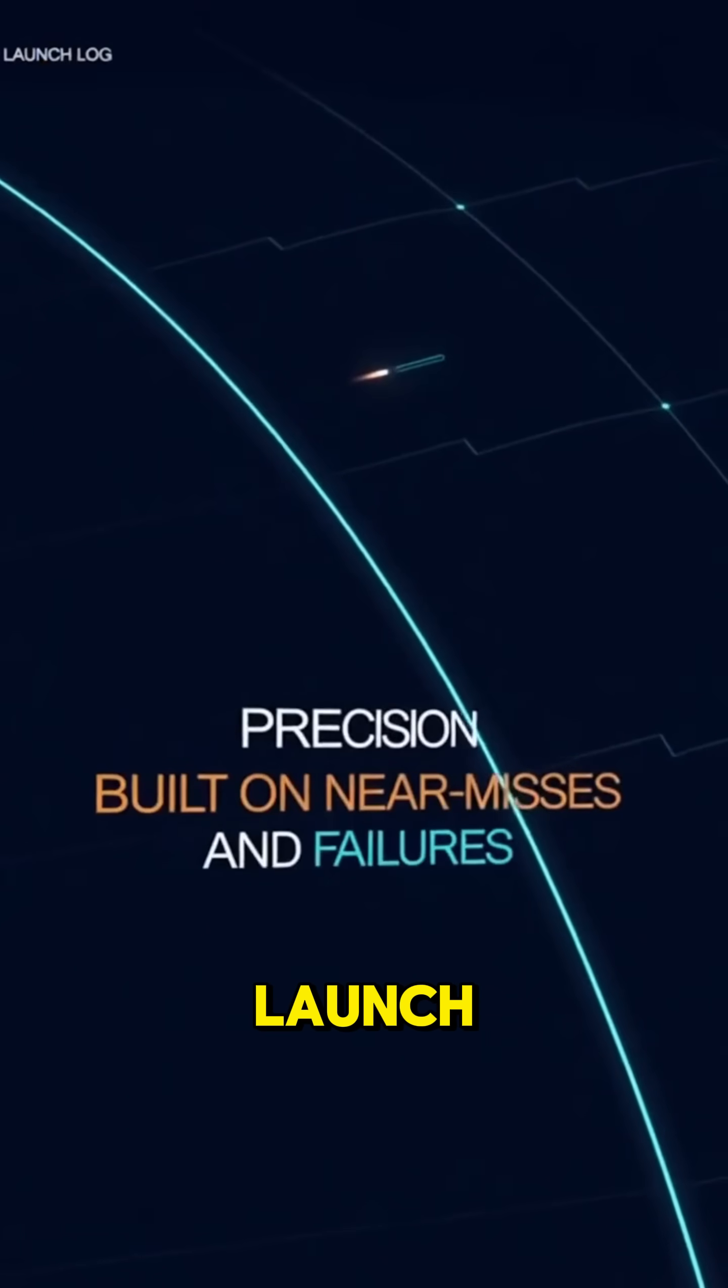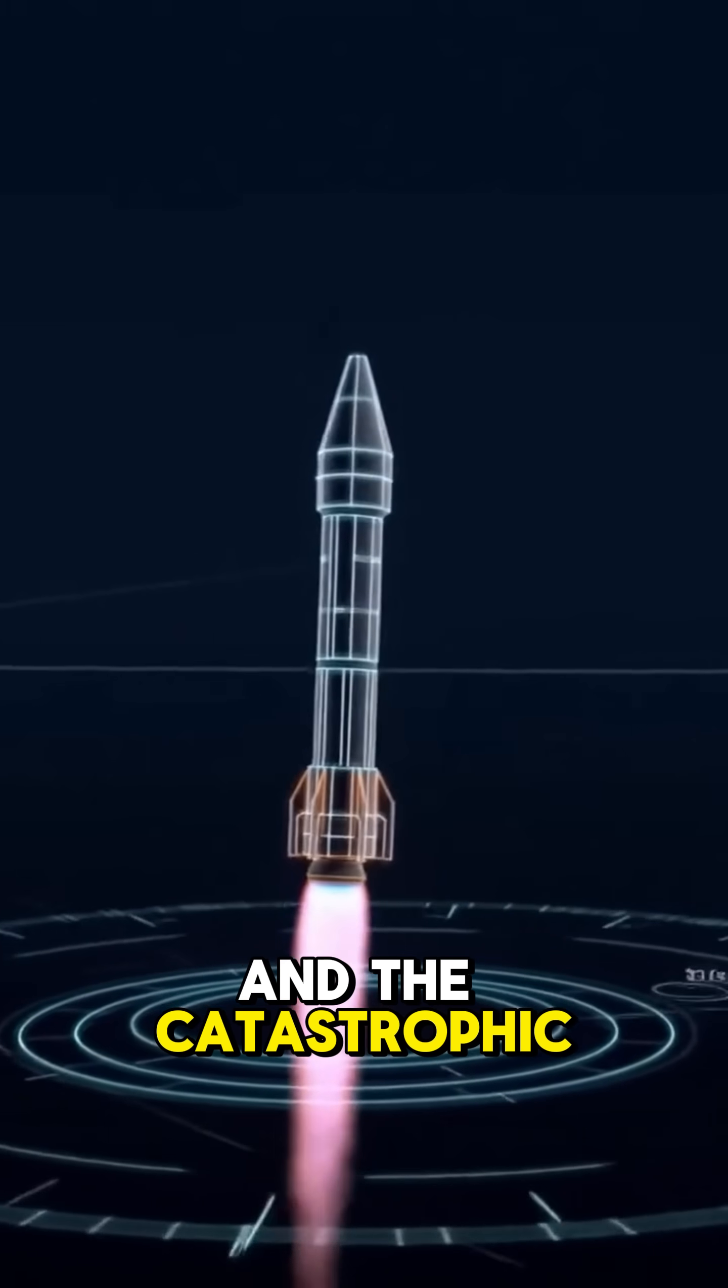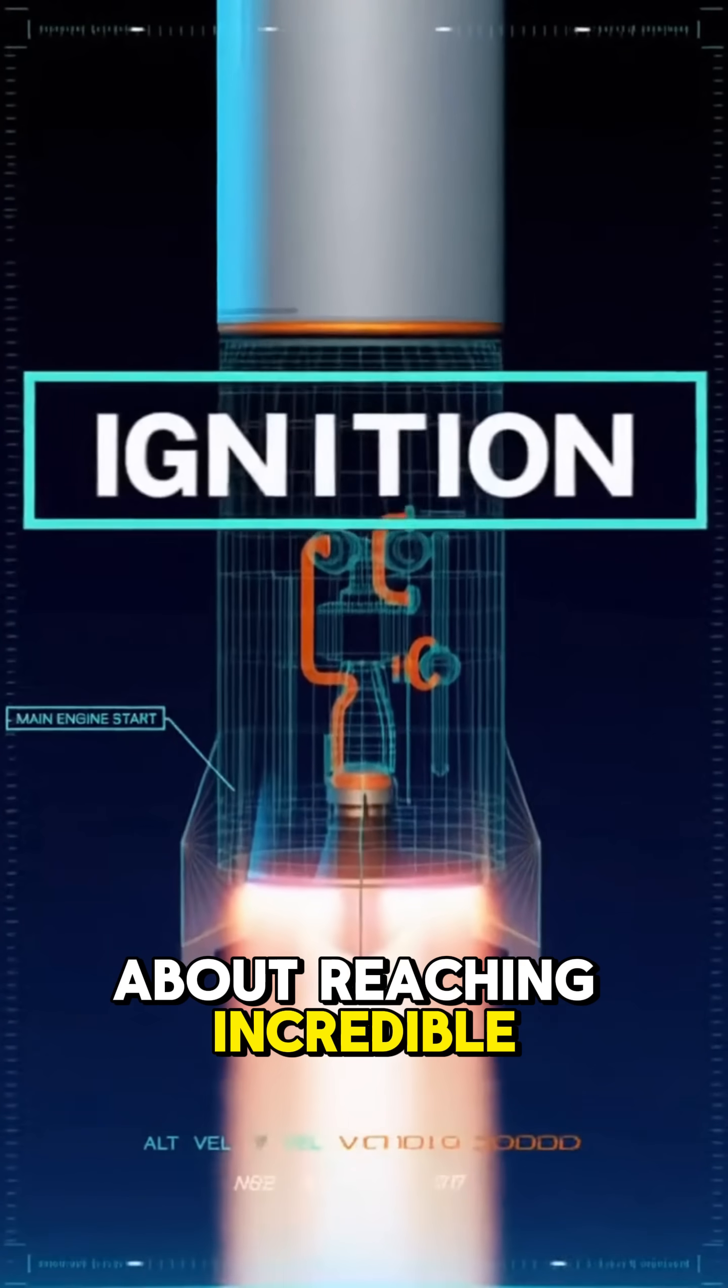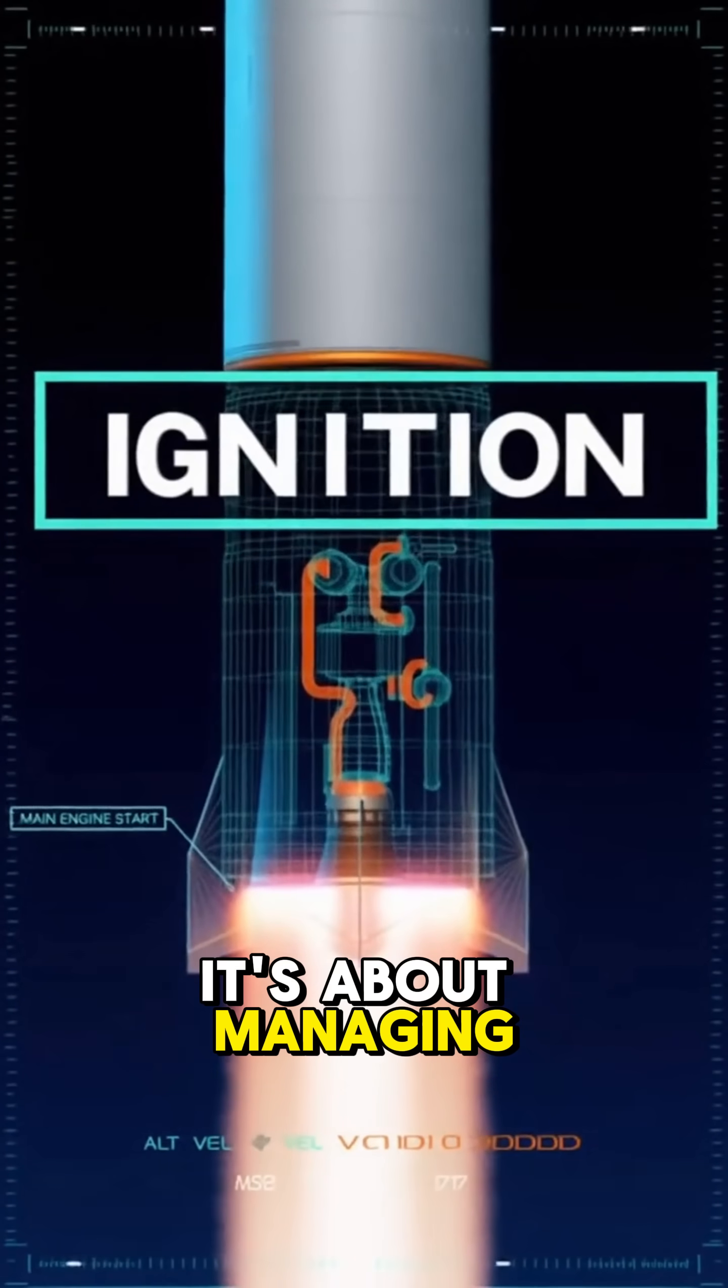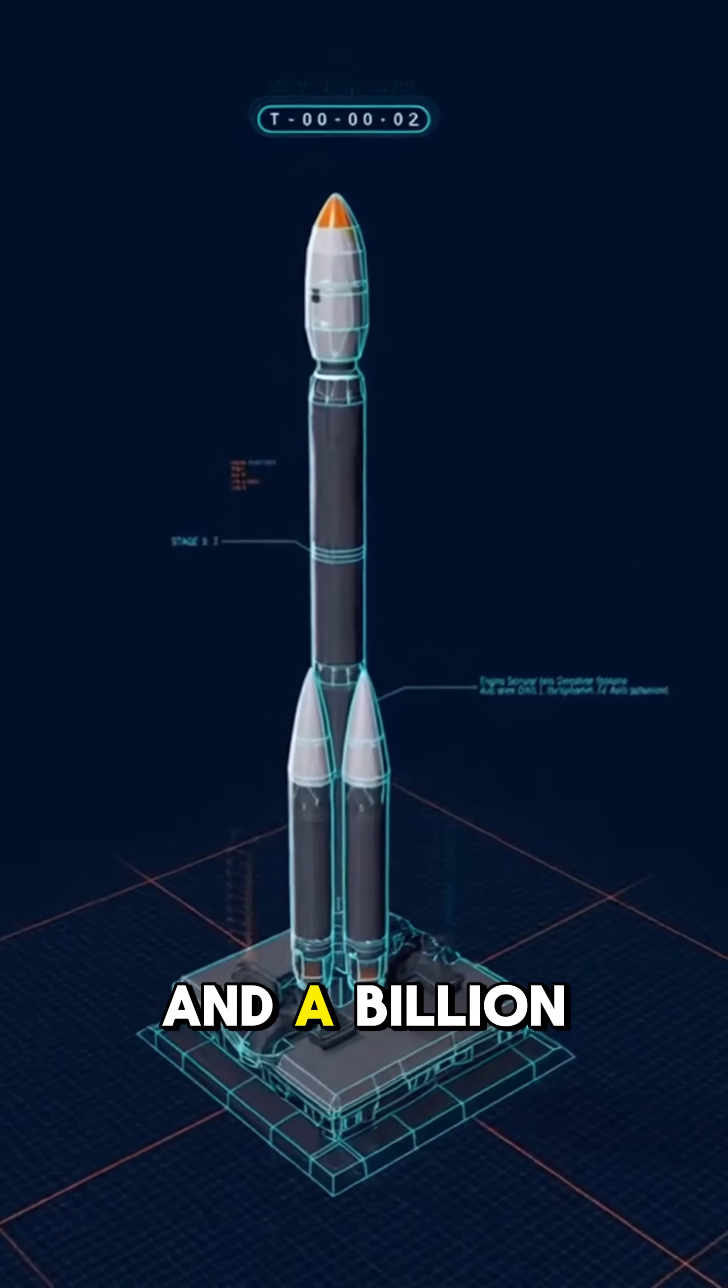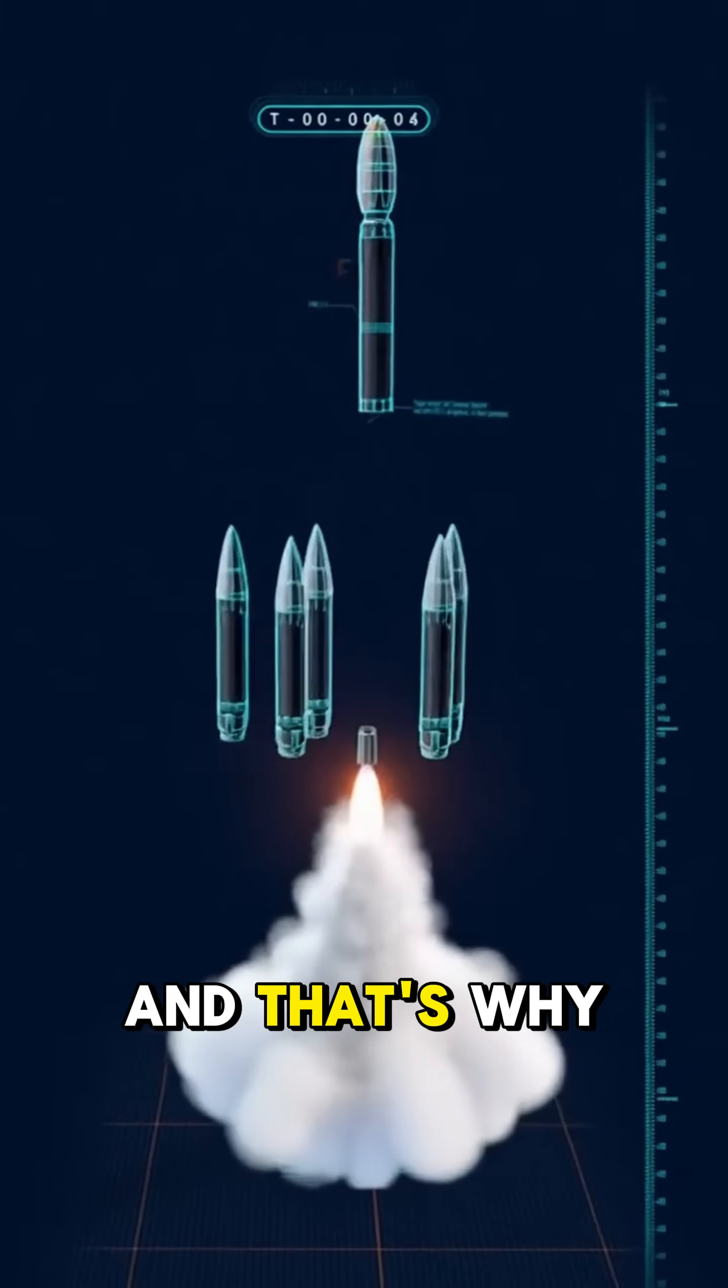So, when you watch a rocket launch, remember the near-misses, the precision required, and the catastrophic failures that pave the way. Because getting to space isn't just about reaching incredible speeds. It's about managing mind-blowing complexity. And the difference between a successful launch and a billion-dollar fireworks show can be as little as two seconds.